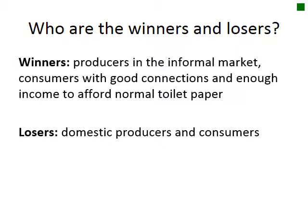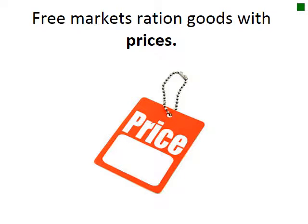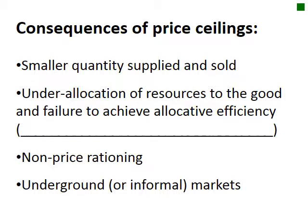Who are the winners and losers? Winners are producers in the informal market and consumers with good connections and enough income to afford toilet paper. Losers are domestic producers and consumers generally. Rationing mechanisms when a shortage exists include long lines, which are inefficient, and seller discrimination — rationing according to personal biases — which is also inefficient and potentially unfair. Free markets ration goods with prices. Consequences of price ceilings include smaller quantities supplied, under-allocation of resources, non-price rationing, and underground markets.